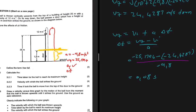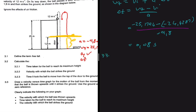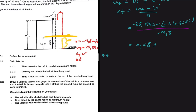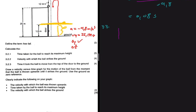There are other ways to solve that problem, but that's the approach I chose. For question 3.3, the last question: draw a velocity-time graph for the motion of the ball from the moment it is thrown upwards until it strikes the ground, using the ground as the zero reference. Clearly indicate the required values on your graph.